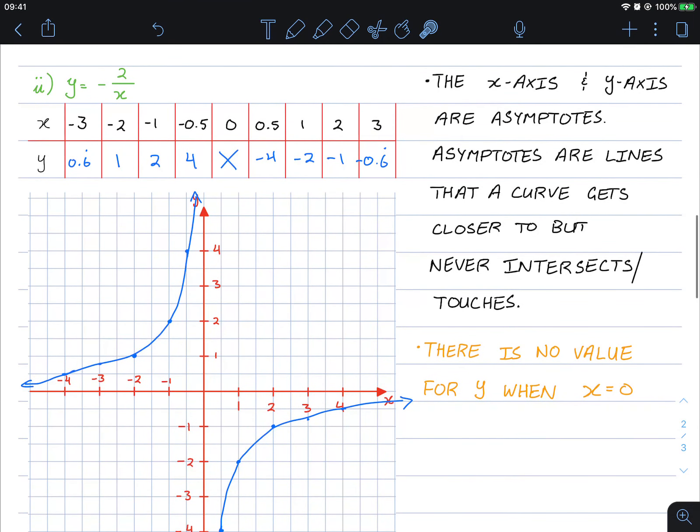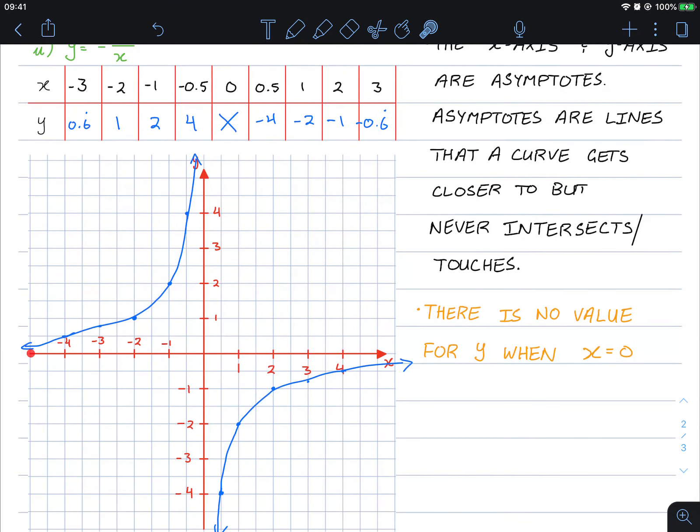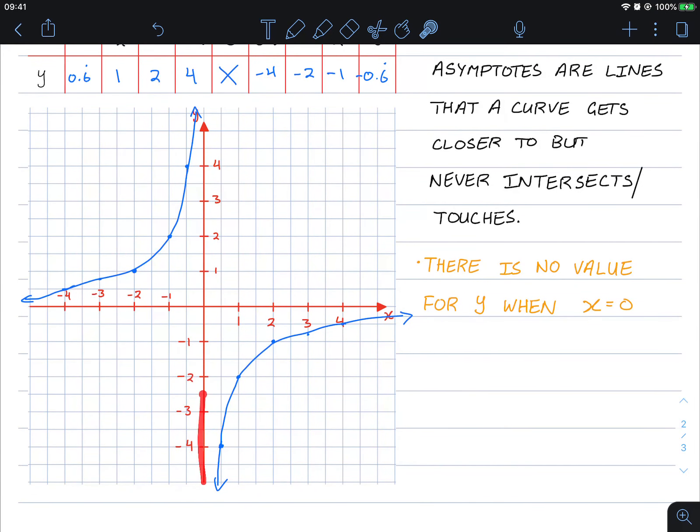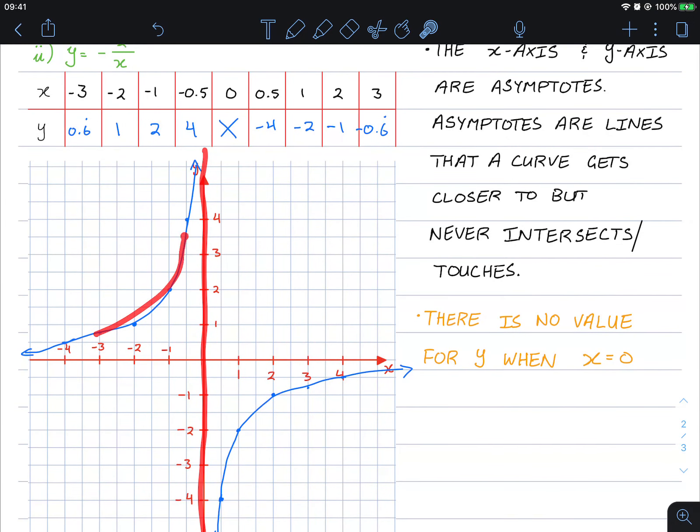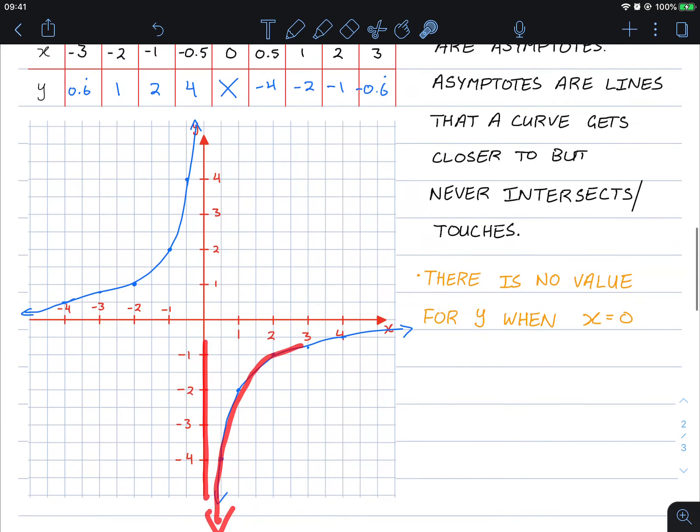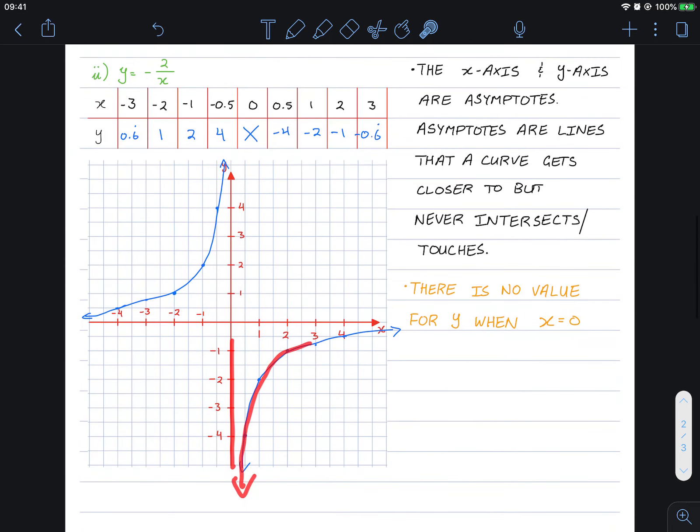There are asymptotes. At x equals 0, that line there, the function gets closer and closer on this side, and closer and closer on this side. Same goes for y. Sorry, this line, the y-axis. This curve gets closer and closer along this way, and closer and closer along this side. So those two are asymptotes.